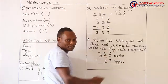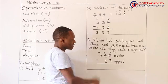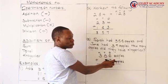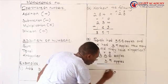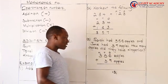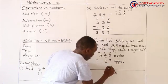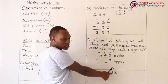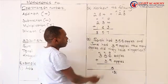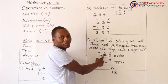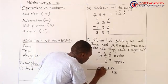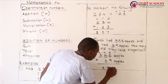Since we are in primary 4, we can simply add and say: 6 plus 9 apples gives 15. But I cannot write the whole 15 under the ones. I take the last digit, which is 5, and write it there. Then I take the 1 and carry it to the next place value. So: 1 carried plus 5 equals 6, plus 3 gives 9. Under the 100s place value I have one number, which is 3. Therefore the answer is 395.